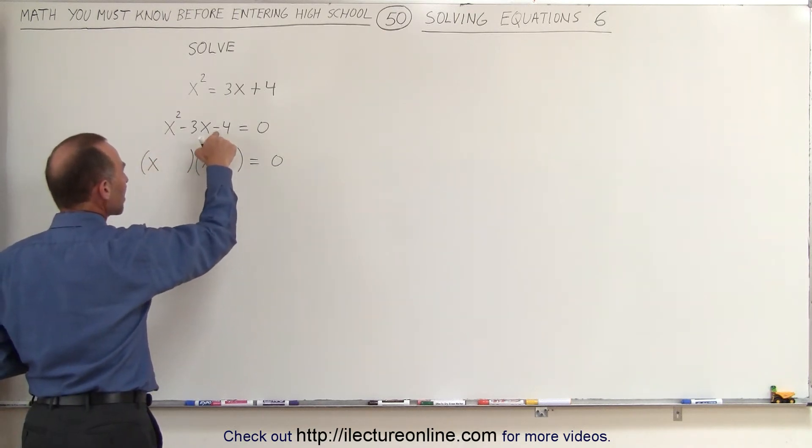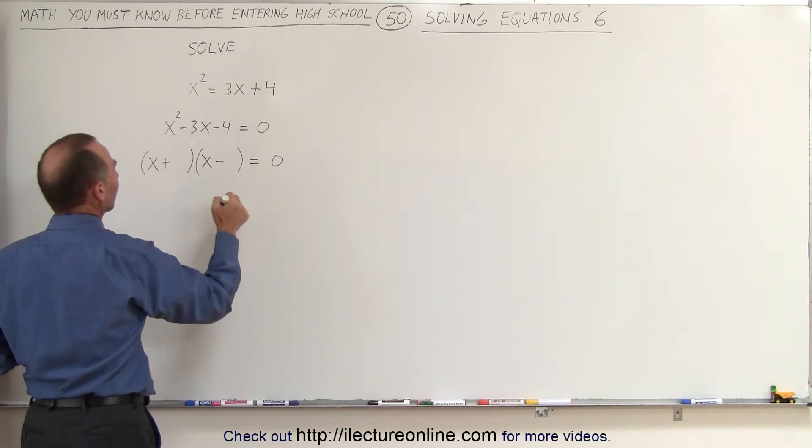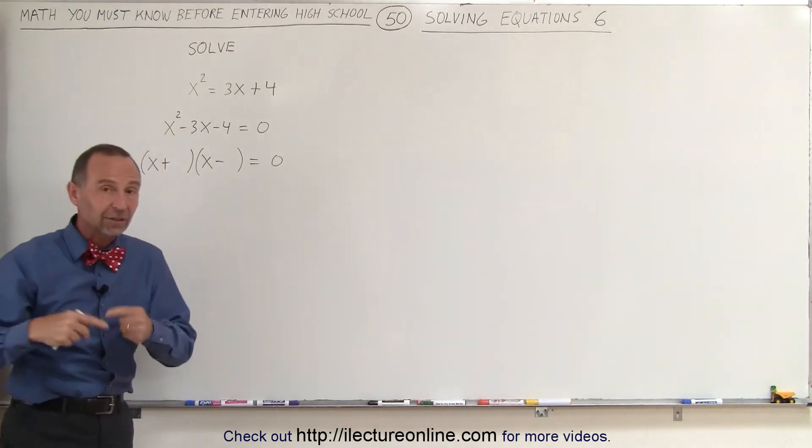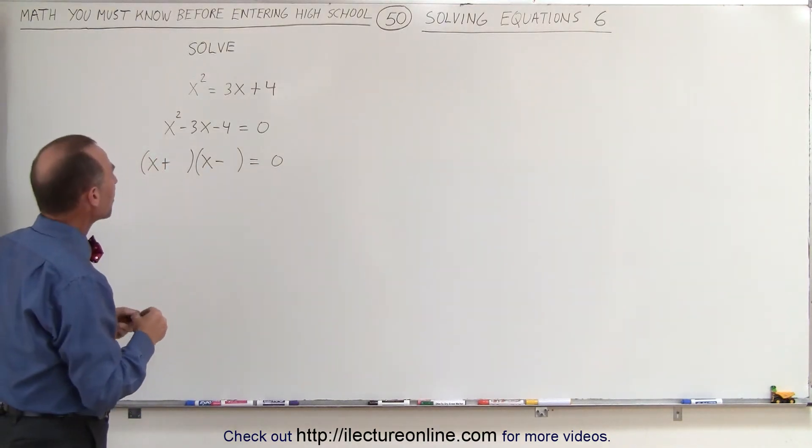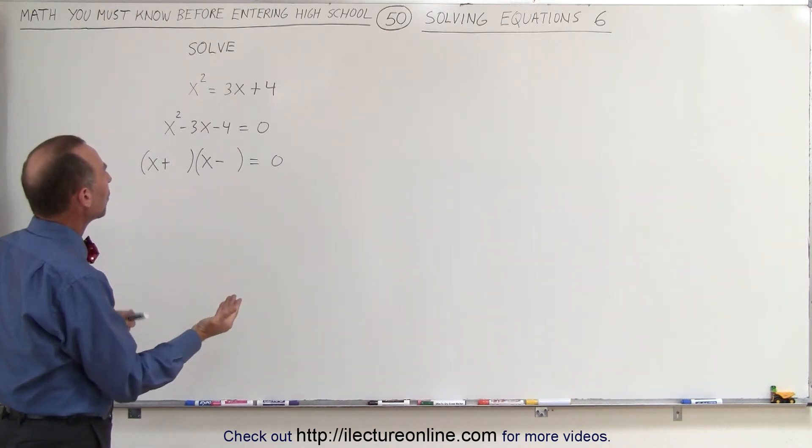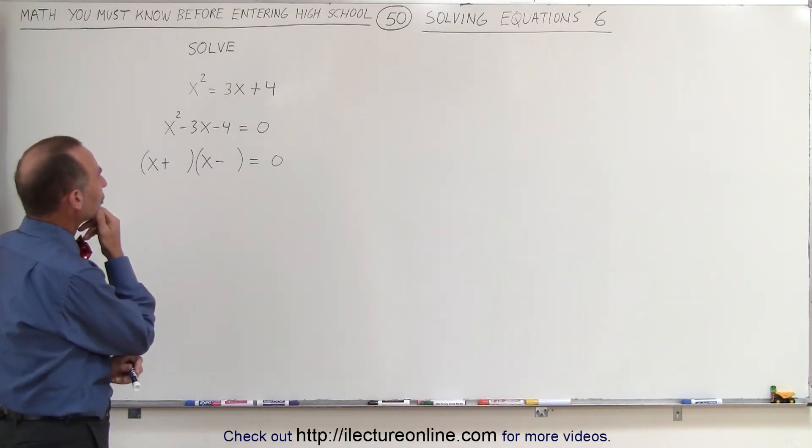And since it's a negative here, we need a positive and a negative. So when we multiply, a positive negative gives us a negative. Now we're looking for two numbers. When we multiply, we get negative 4. When we add, we get a negative 3.